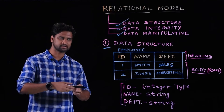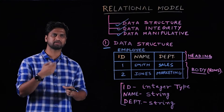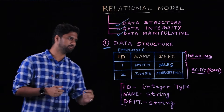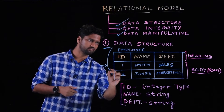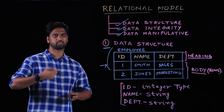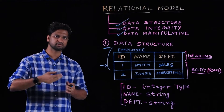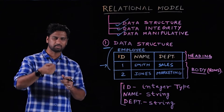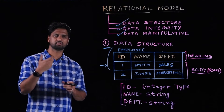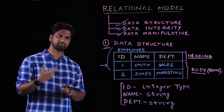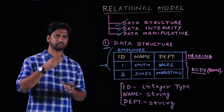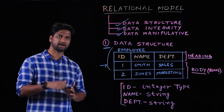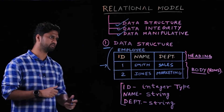We store data in tabular format in the relational database management system. This is the employee table, which represents a real-life entity called employee. In an office setting, a person working for a company is called an employee, and any employee will have some kind of employee ID, name, and department. That is a real-life entity, and when we represent it in the RDBMS world, we store it in the form of tables.